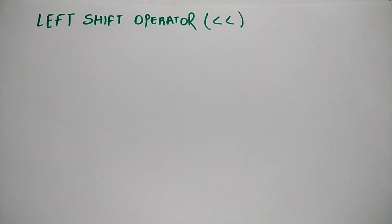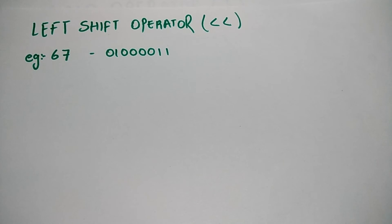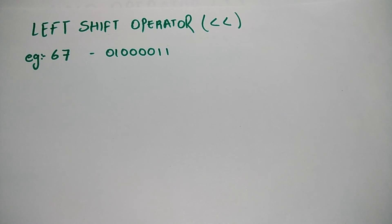You can see the symbol of the left shift operator in the bracket, which is used in embedded programming. The left shift operator shifts the binary towards the left. Let me give you an example — I have taken the number 67 and converted it into binary. This binary is in 8-bit mode as per the AVR microcontroller. The binary of 67 is 0100 0011. If you don't know how to convert to binary, go through my previous video on this channel on how to convert decimal to binary.